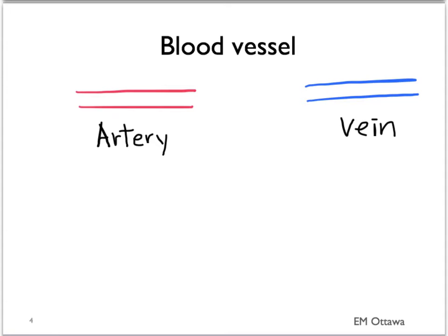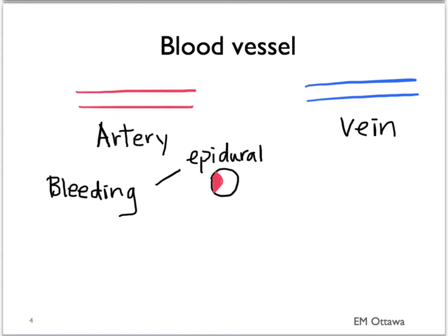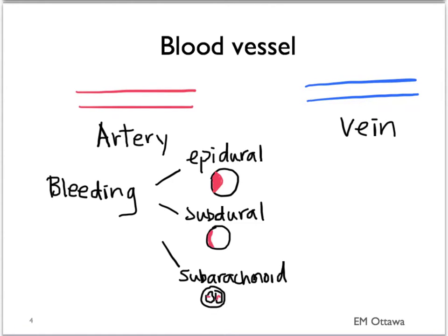Bleeding from a ruptured artery, either into the epidural space, subdural space, or subarachnoid space. The artery can also go into vasospasm, causing migraine.